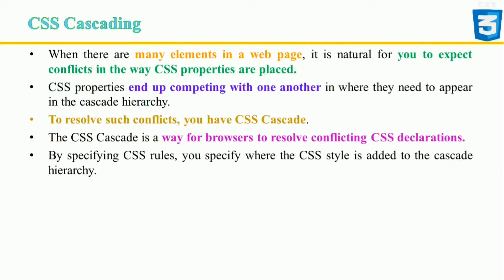CSS stands for Cascading Style Sheets. The cascade is the algorithm used to determine how a given element should look. Each element can have many different relevant CSS rules and these can often conflict with each other. As a general rule, the more specific CSS rule will beat the less specific CSS rule to decide the final appearance of an element.